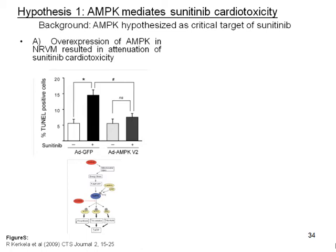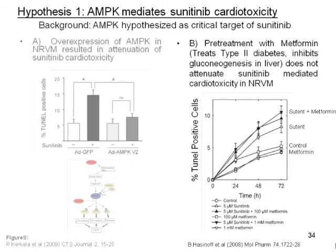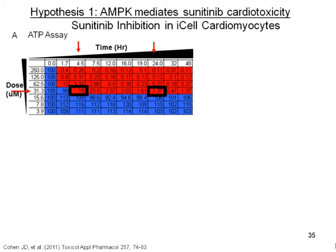Tom Forse's group, in a paper published by Kerkella, overexpressed a truncated form of AMPK in neonatal rat ventricular myocytes and then treated with sunitinib. There was a clear attenuation of sunitinib-mediated cell death as measured by the TUNEL assay. On the other hand, Brian Hassanoff's group pre-treated with metformin and then treated with sunitinib, hoping to see an attenuation of sunitinib-mediated cytotoxicity because metformin over-activates AMPK, but he did not see any attenuation. Therefore, we wanted to test this in a more relevant human model with a more relevant energy homeostasis mechanism, to determine whether sunitinib is actually mediating cardiotoxicity through AMPK.